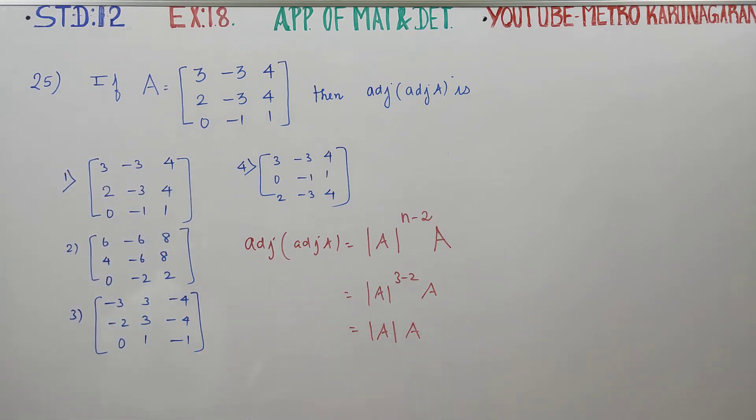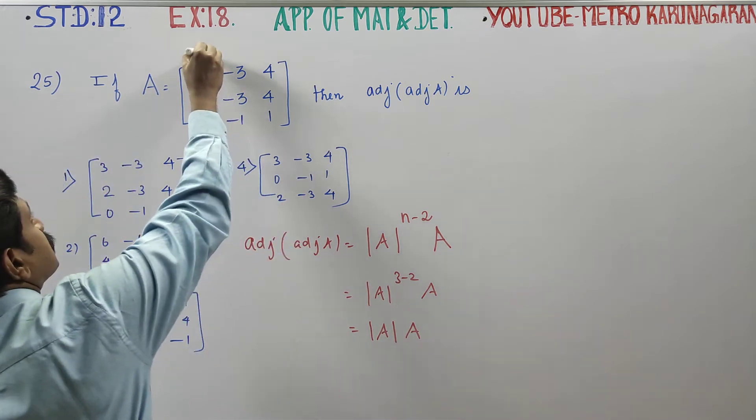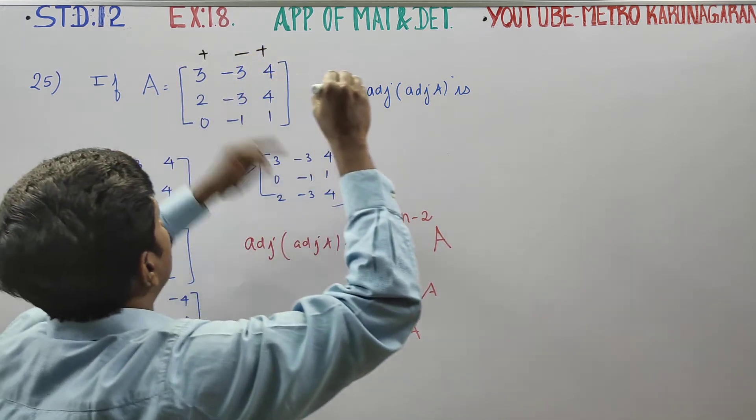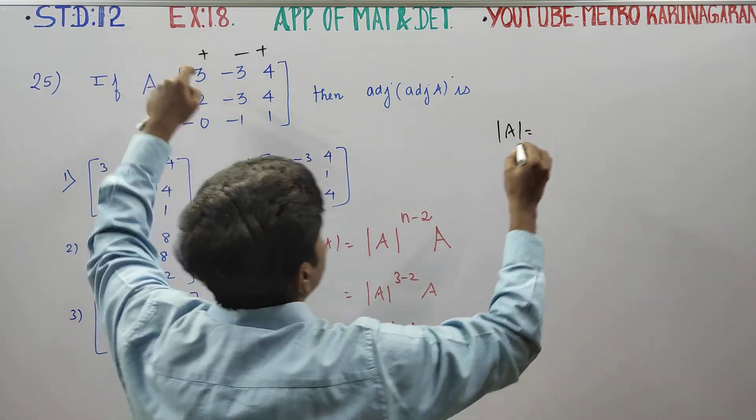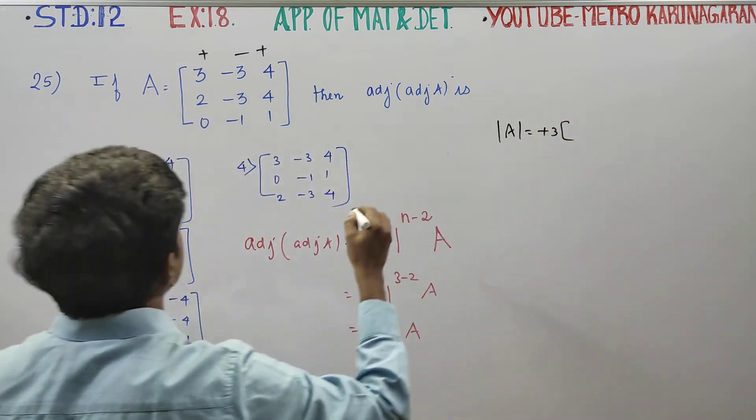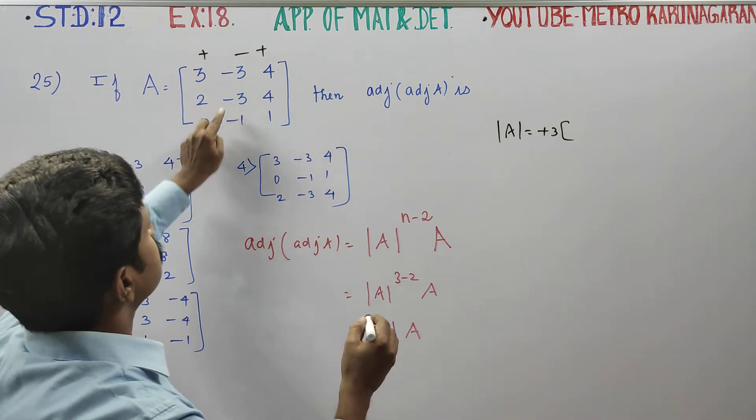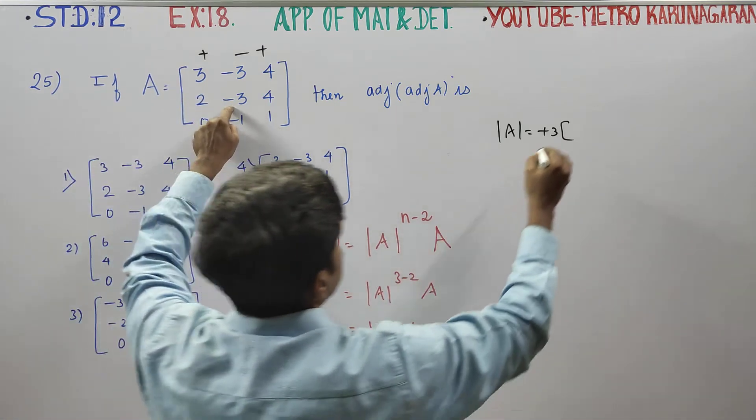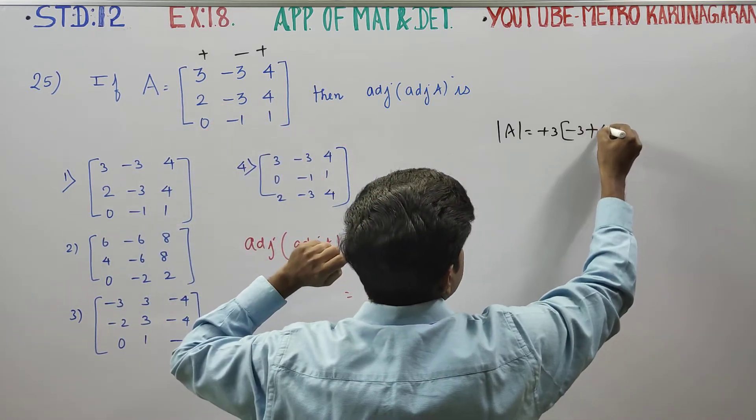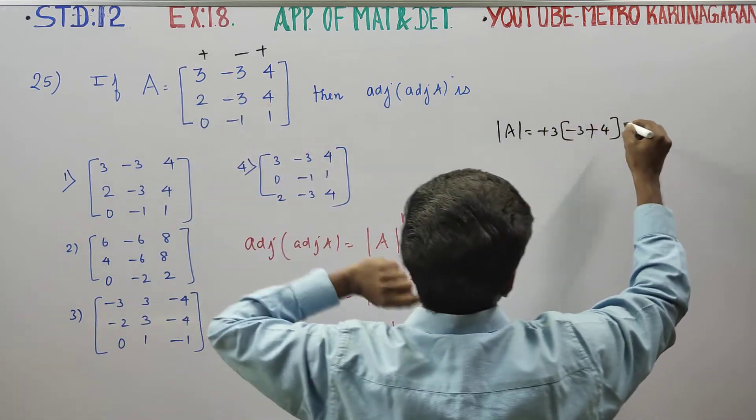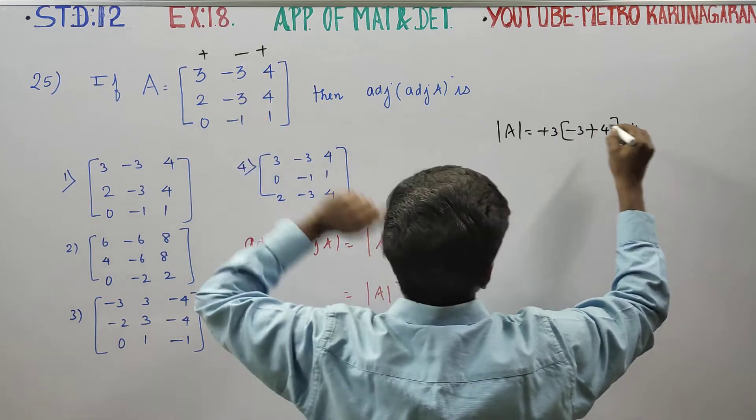Determinant A, this will start plus, minus, plus. It will open the number. Plus 3 into, close, right-hand side minus left-hand side. Right-hand side is minus 3, minus left-hand side. This is minus 4 into plus 4. That's why minus into minus plus 3.